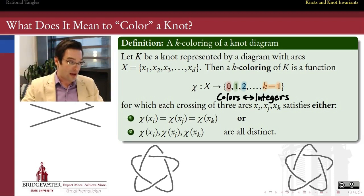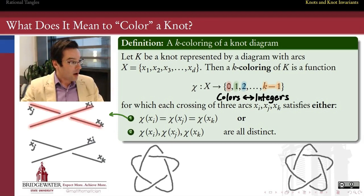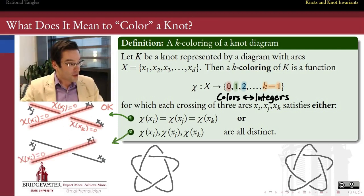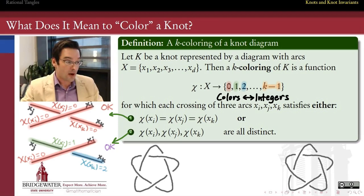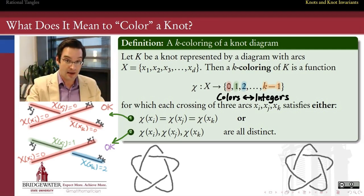Here's a diagram of the knot 5-1. At each crossing, one of two conditions must hold. In this example, all three arcs are colored with the same integer 0, or red — so this crossing is okay with all three colors the same. Or at a crossing I might assign one arc a 0, another arc a 1, another arc a 2 — all three different. We can mix and match at different crossings, but every crossing has to satisfy one or the other of these two conditions.